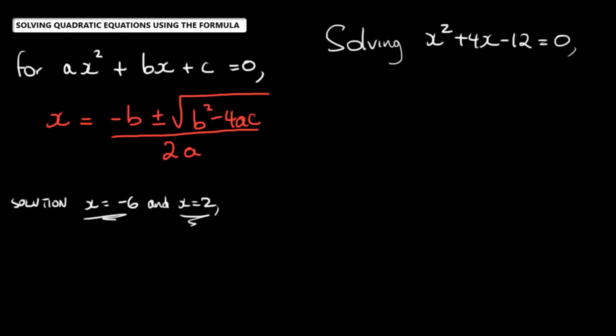The first thing I need to do is to check if my equation is in the general form. And as you realize here, it's set to zero, it's equal to zero. So it's in the general form. So I can identify the values of A, B, and C.